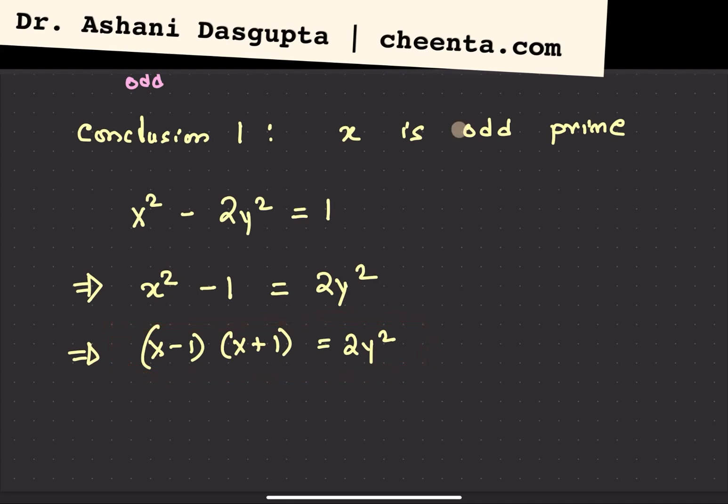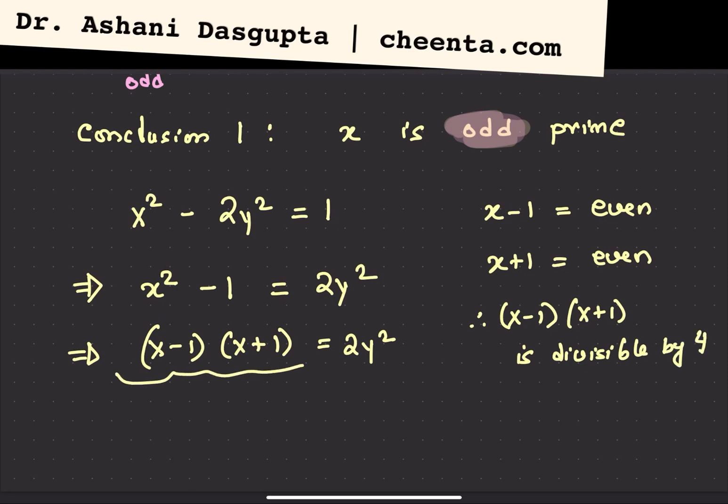Notice that x is odd, which means x minus 1 is even, x plus 1 is even. Therefore, the product of x minus 1 and x plus 1 is divisible by 4. So the left-hand side is divisible by 4, which means the right-hand side is also divisible by 4. Now we have one of the twos here, which means y square is divisible by 4.